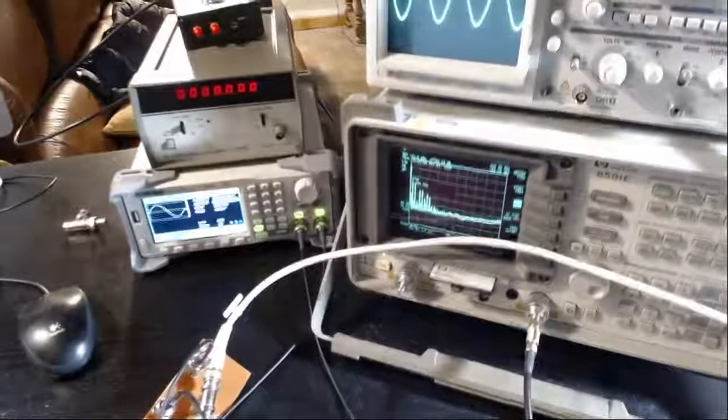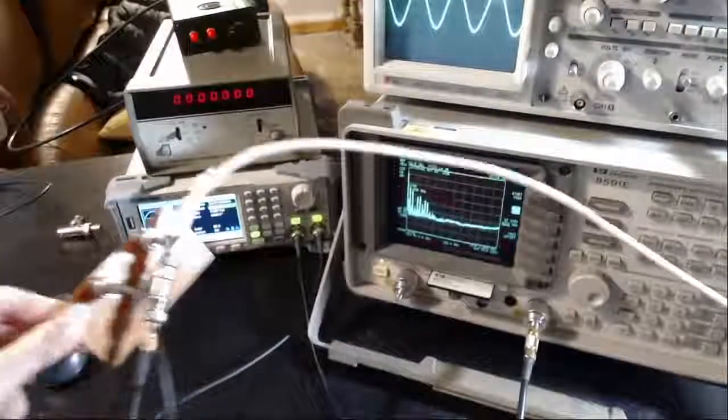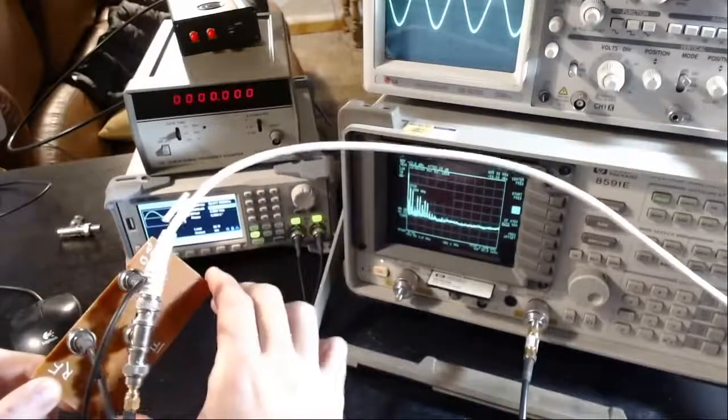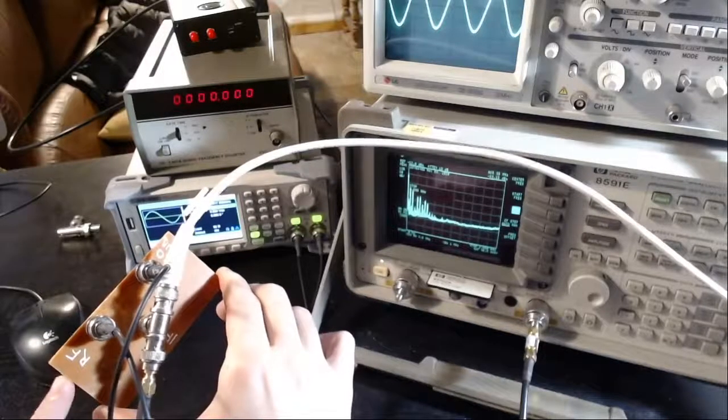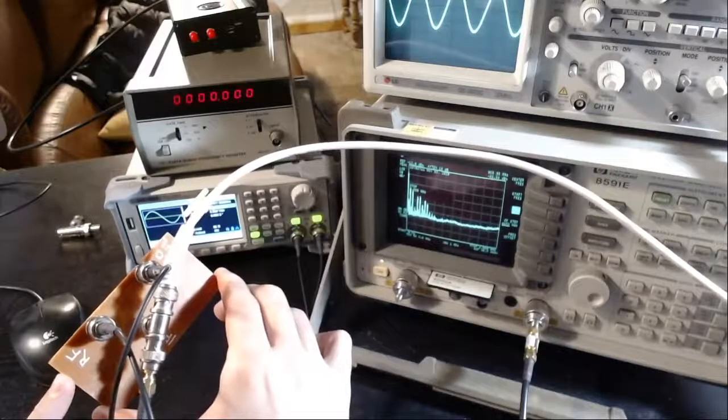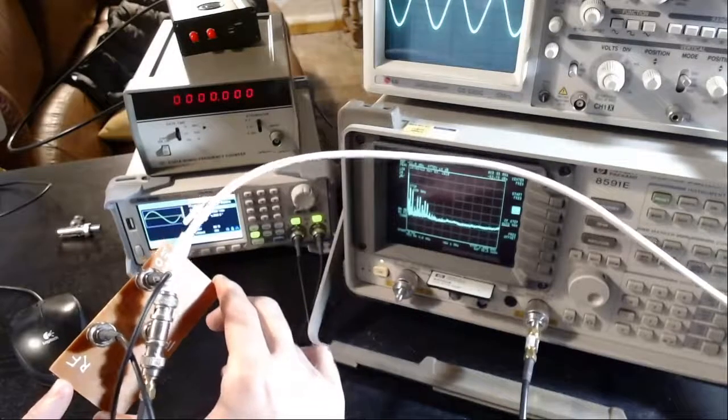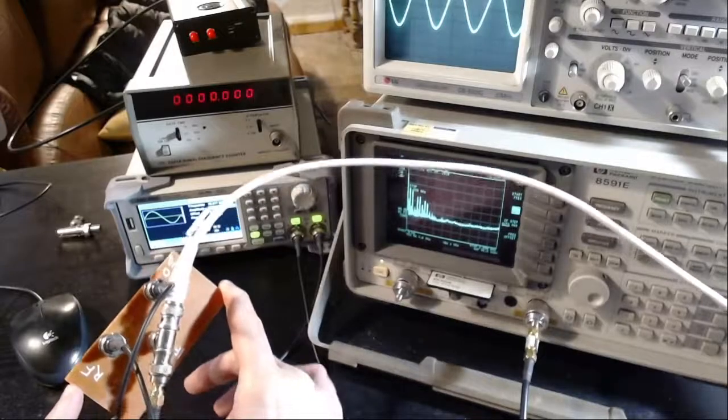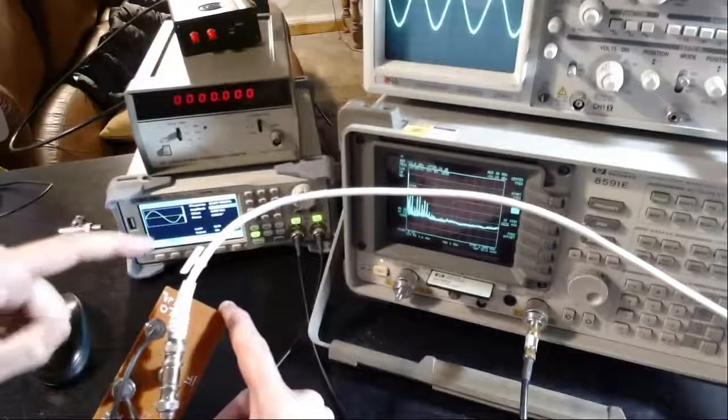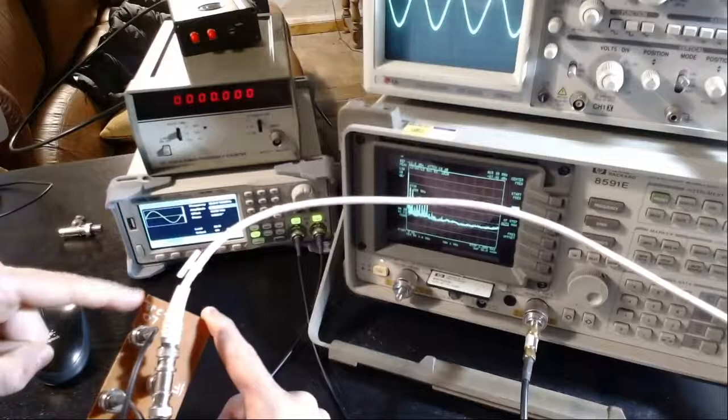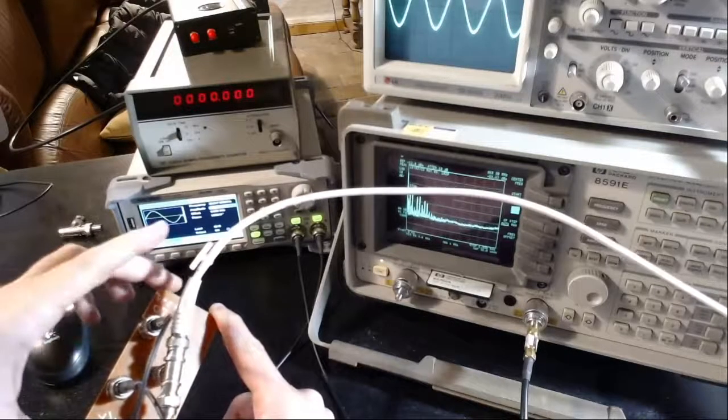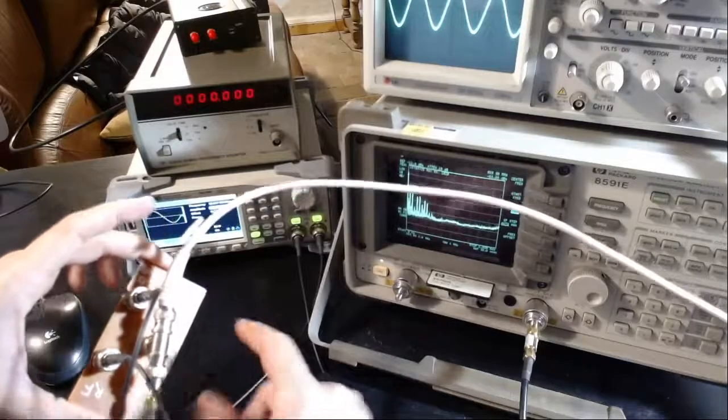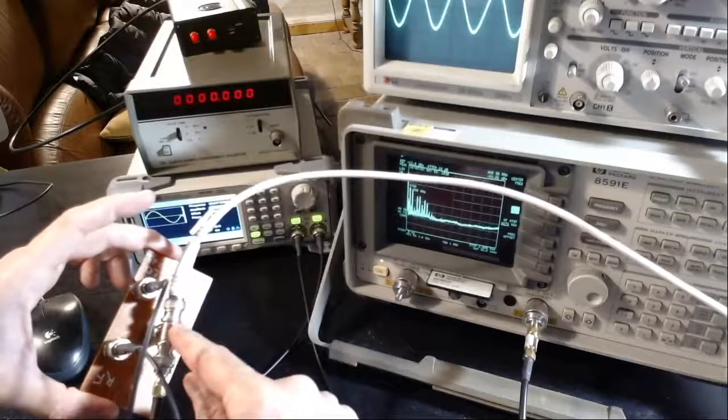These two signals are going to my mixer. The RF port is receiving the weak signal at minus 25 dBm at 25 megahertz and 17 kilohertz. The local oscillator port is receiving the 25 megahertz at 7 dBm signal.